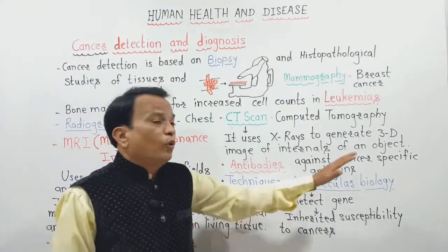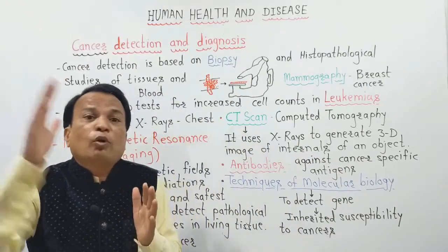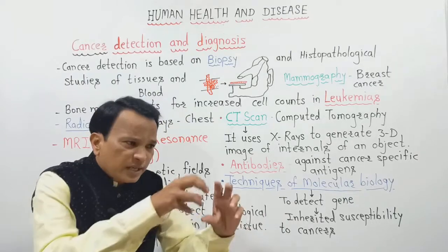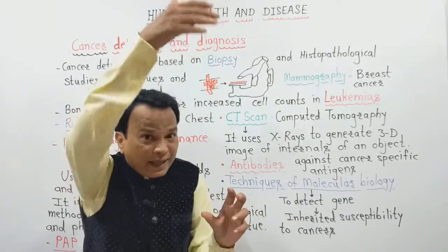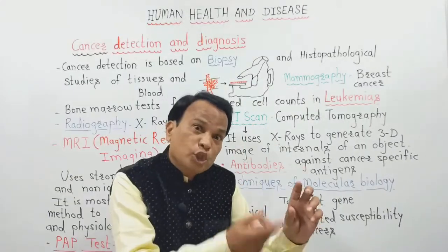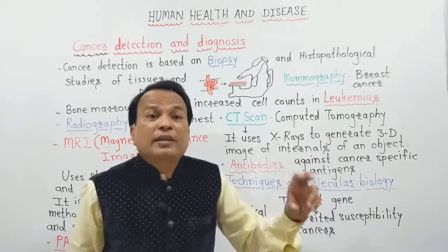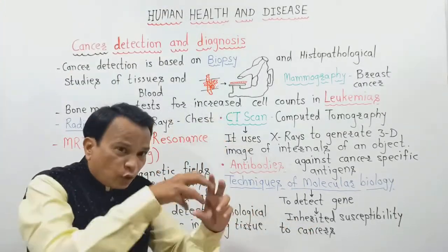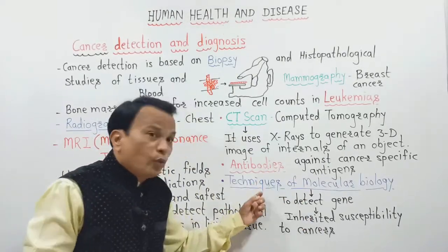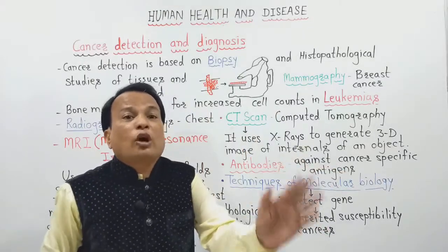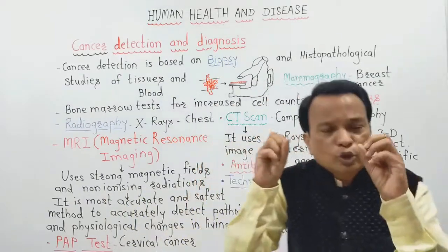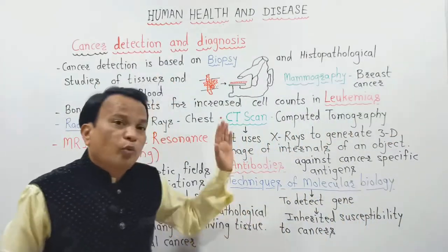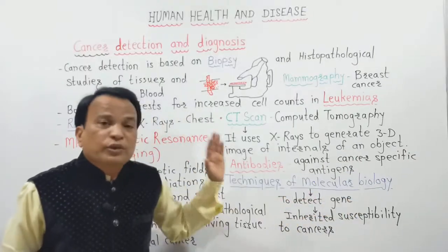Another most important technique is molecular biology. Through genetic identification and gene testing, individuals with hereditary cancer chances can be identified. A person who may get cancer due to hereditary transmission through parental or maternal genes and chromosomes can be detected. Doctors can then advise them to protect themselves from carcinogenic agents such as smoking or tobacco, thus preventing cancer through molecular biological technologies.